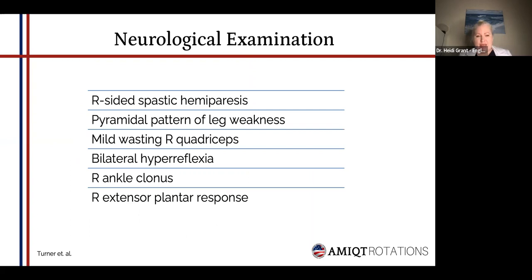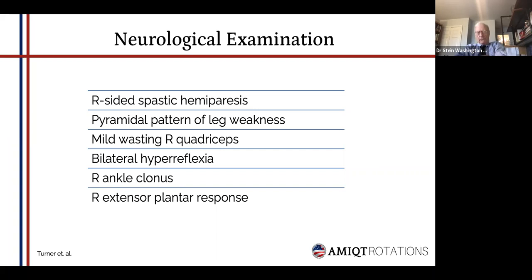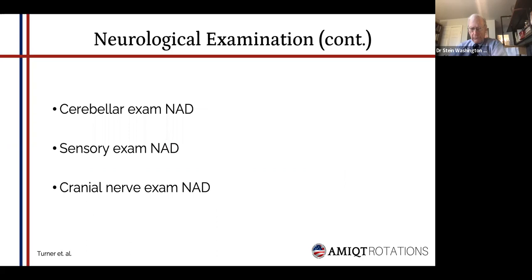Upon examination, it was noted that the patient had a right-sided spastic hemiparesis. He had the classical pyramidal pattern of right leg weakness and mild wasting of his right quadriceps muscle. There was also bilateral hyperreflexia, generalized in both the lower and upper extremities, and clonus was elicited in the right ankle, and an extensor plantar response — the Babinski response — was noted on the right.